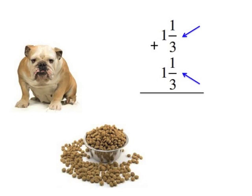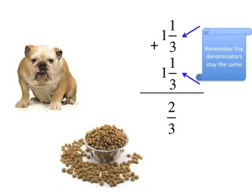Let's start with the fractions, one third plus one third. The denominator three stays the same and we add one plus one, which equals two thirds.